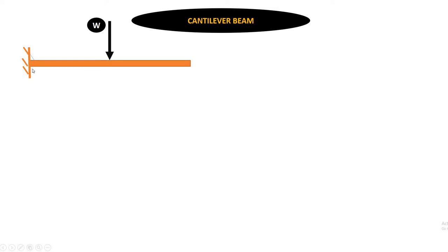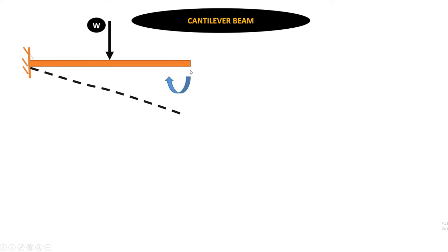If I apply a point load on the cantilever beam, the deflected shape will deflect downward at the free end. Now, if we have this deflection, you can see which type of moment is generated — it is a clockwise moment on the right side.